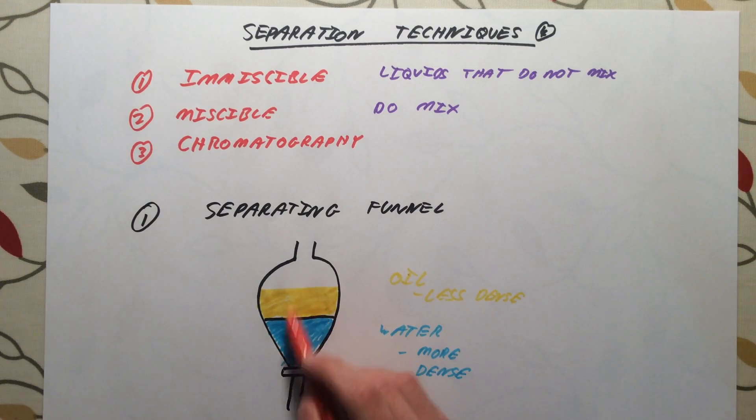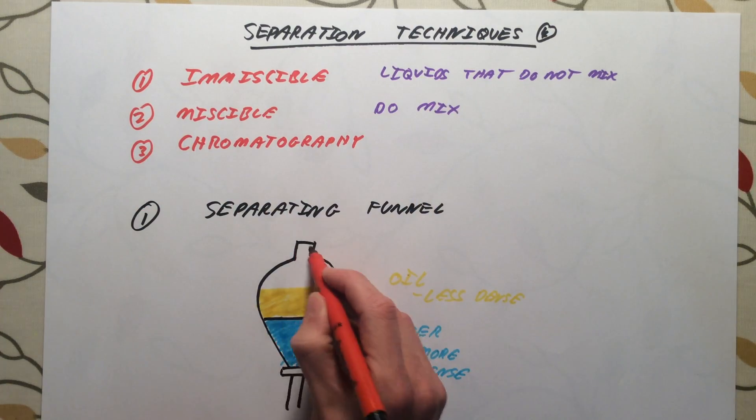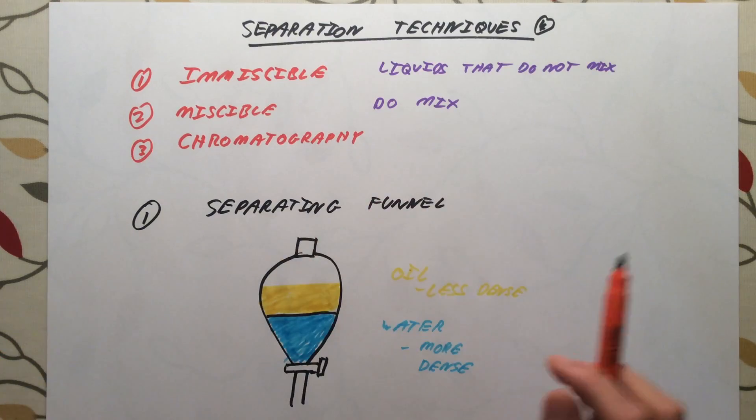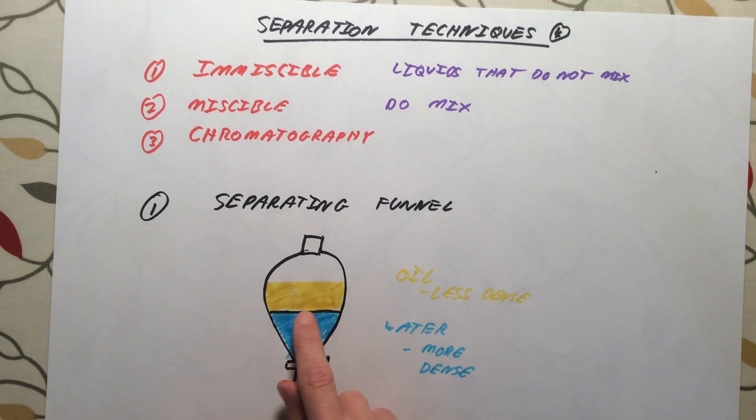All we need to do is pour our mixture into a separating funnel, we're going to invert it. Well, obviously we want to put a lid on here first, otherwise, you can do what I did when I was in labs at university, and pour ferrocene all down my front. Anyway, lid on that, invert your separating funnel several times, allow the layers to separate out, the more dense layer will go to the bottom, we can then simply open the tap and drain off that more dense layer, we will close it just before we start getting the oil out, and then we can separate them nicely. That is our first method using a separating funnel.